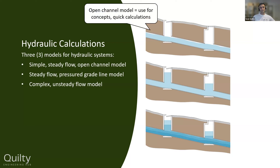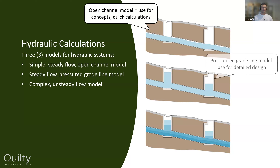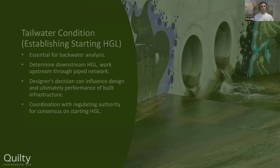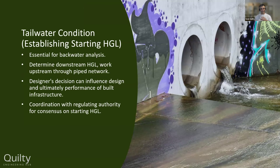The open channel model is used for concept designs or quick calculations — literally pen, paper and a calculator to design a pipe network, which is very effective. The pressurized grade line model is where you jump into computer software for detailed design analysis. When you need to analyze real storms — hydrograph rising limbs or ensembles — or if detention systems are involved requiring volume consideration, you use the complex unsteady flow model.